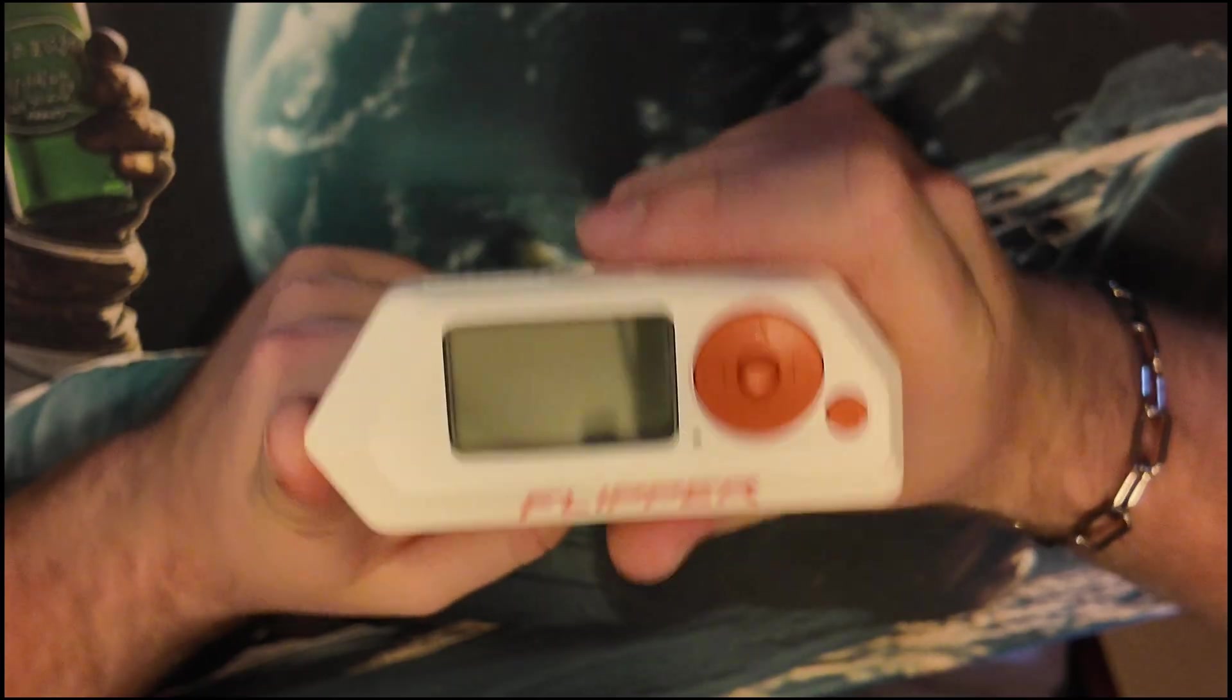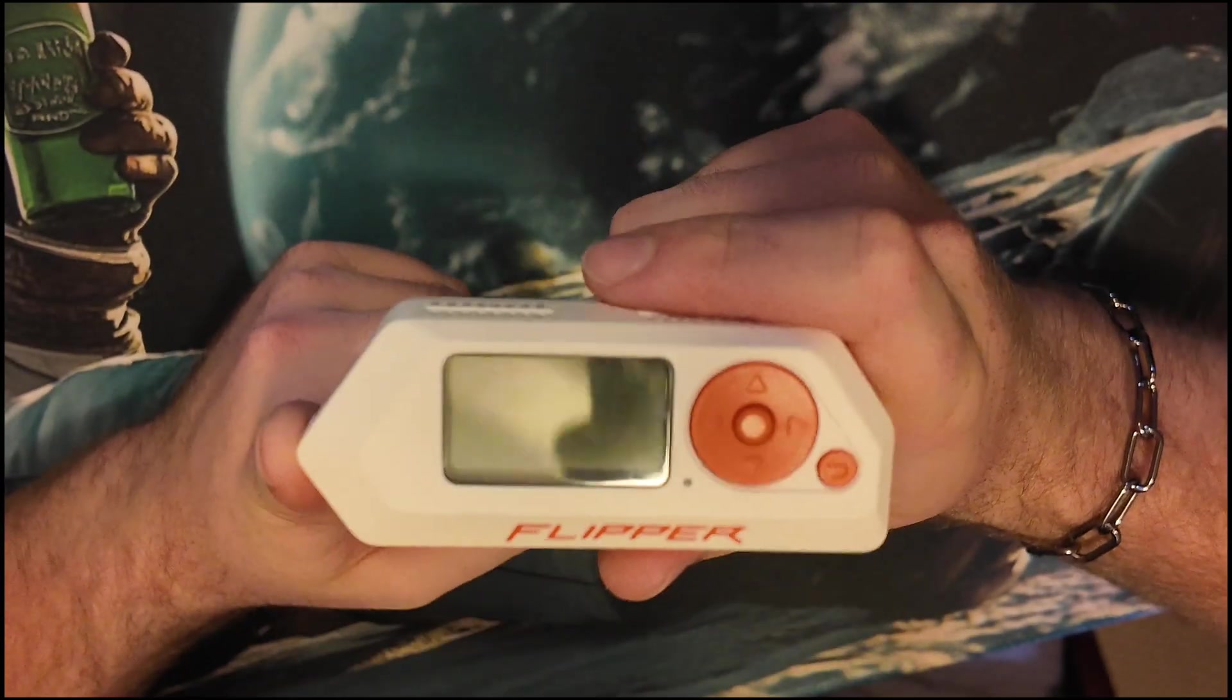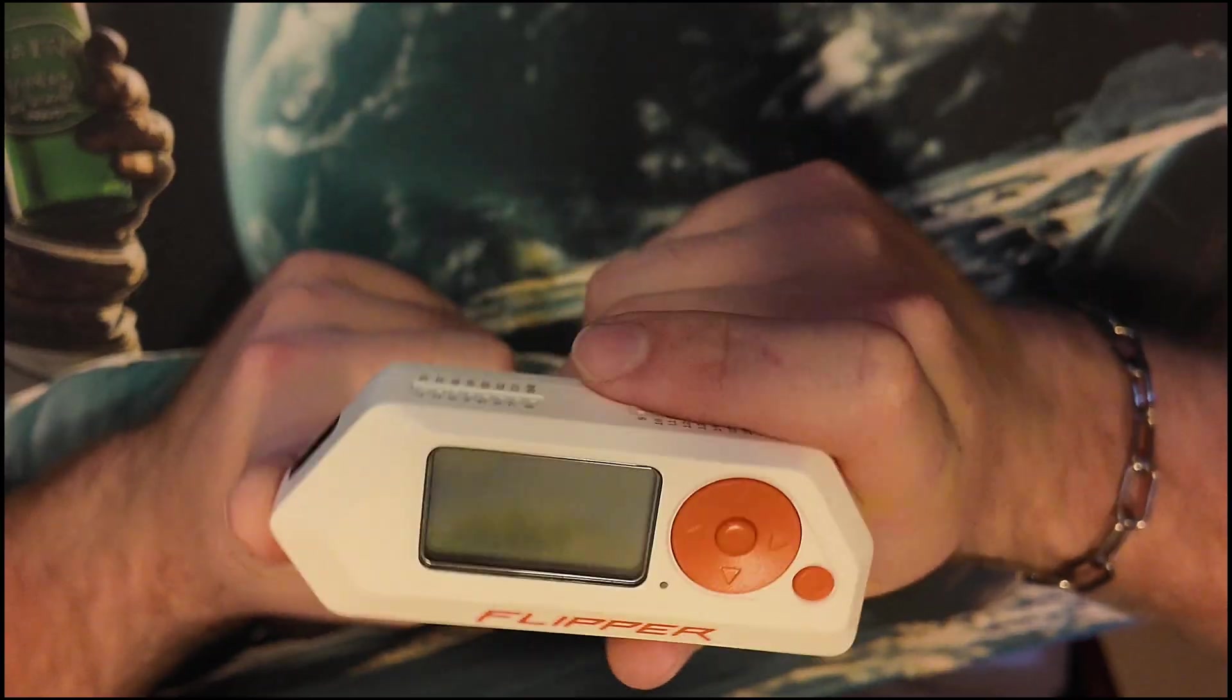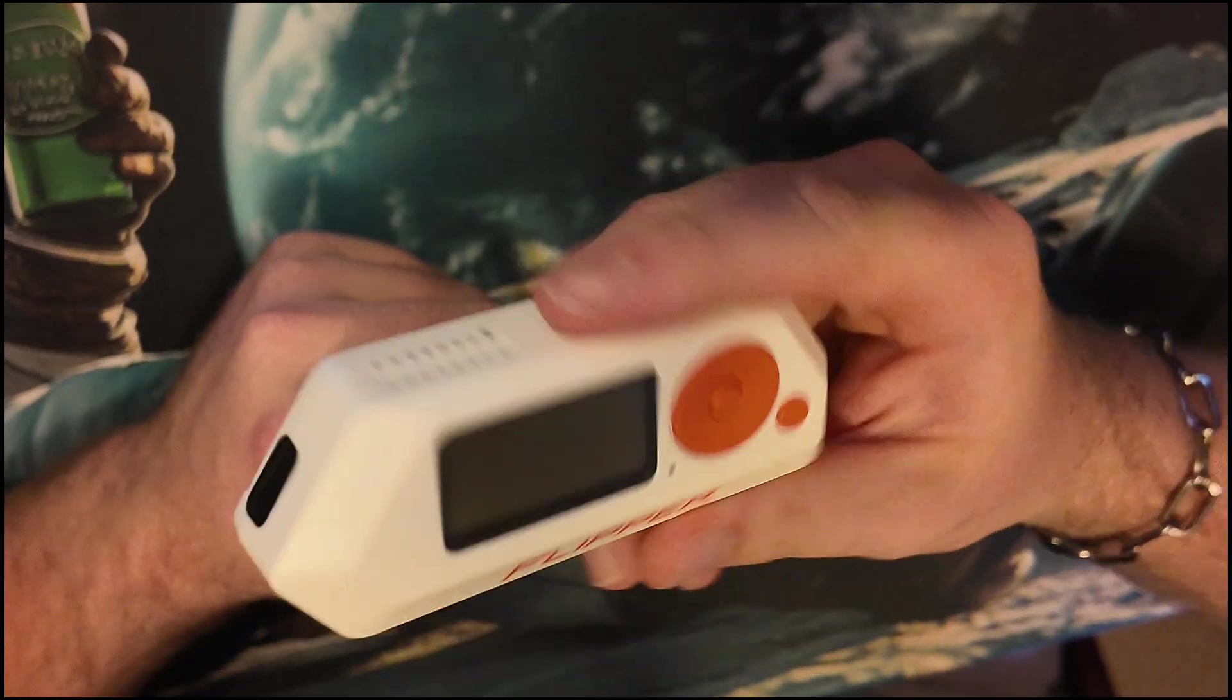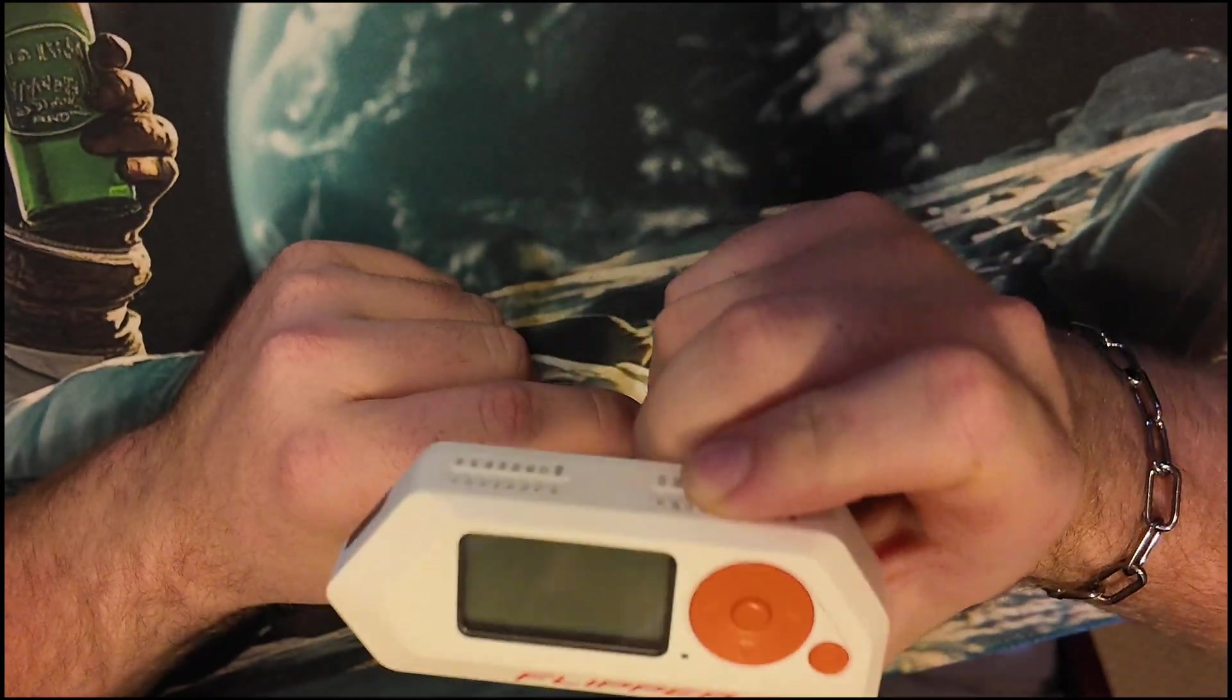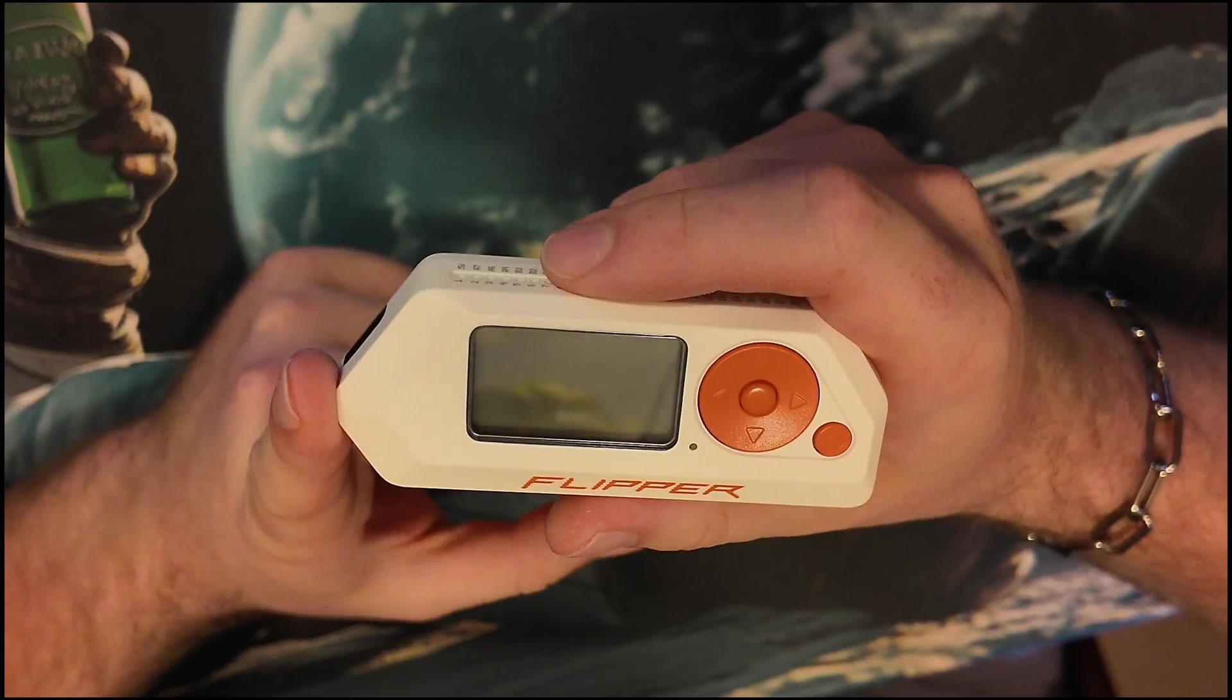Starting with the Flipper Zero, this is an all-in-one cyber multi-tool. It has sub-gigahertz, RFID, NFC, IR, GPIO, bad USB depending on what scripts you're running—the list goes on. It's got a good and beautiful UI and custom frameworks like Unleashed.